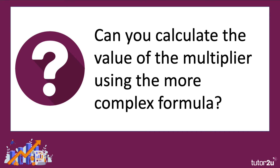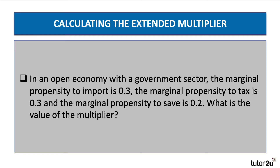Can you calculate the value of the multiplier using the more complex formula? Here's an example taken from a past multiple choice question on the A-level exam. In an open economy with a government sector, the marginal propensity to import is 0.3 — so we import 30% of anything we spend — the propensity to tax is 0.3, and the propensity to save is 0.2. What is the value of the multiplier? Maybe you want to have a go yourself — press pause and press play when you want to go through the answer together.